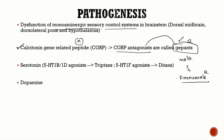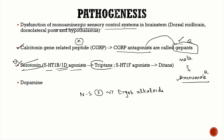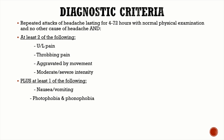Serotonin is also very important in migraine. Major drug classes used for acute migraine are serotonin agonists: non-selective agonists such as ergot alkaloids, and selective agonists including 5-HT1B/1D agonists known as triptans, and 5-HT1F agonists known as ditans. Dopamine is also important in migraine pathogenesis, which is why dopamine antagonists like domperidone and metoclopramide are used in treatment.